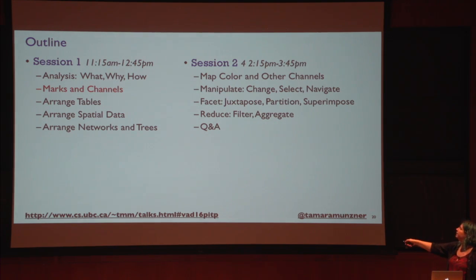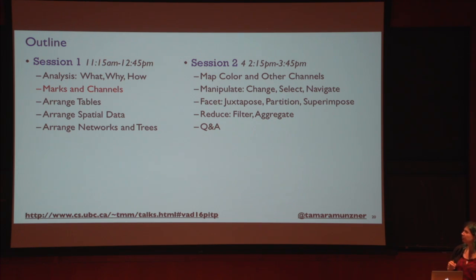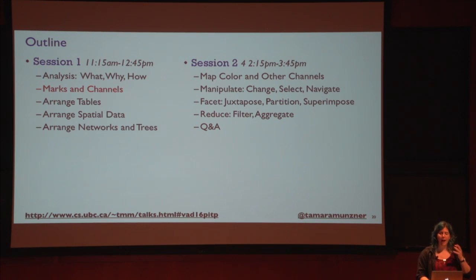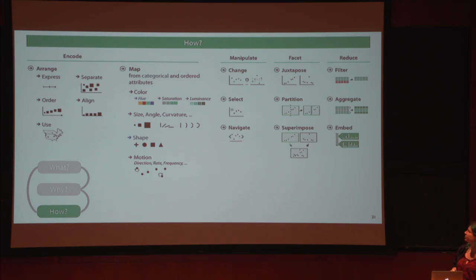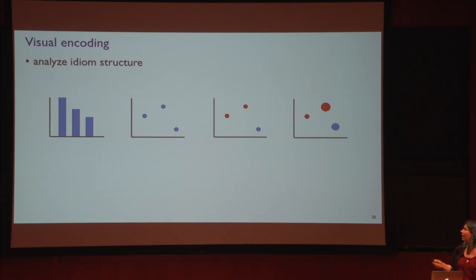Any questions about that first part before we go on? So let's think about this idea of visually encoding information. Coming back to the question of how, and specifically focusing on encoding data — how do we analyze a visualization? Let's specifically talk at the level of idiom — the visual encoding idiom. Here we've got things you've all seen: bar charts, scatter plots. What is a useful way to talk about these? How can we say where they're similar, where they're different?